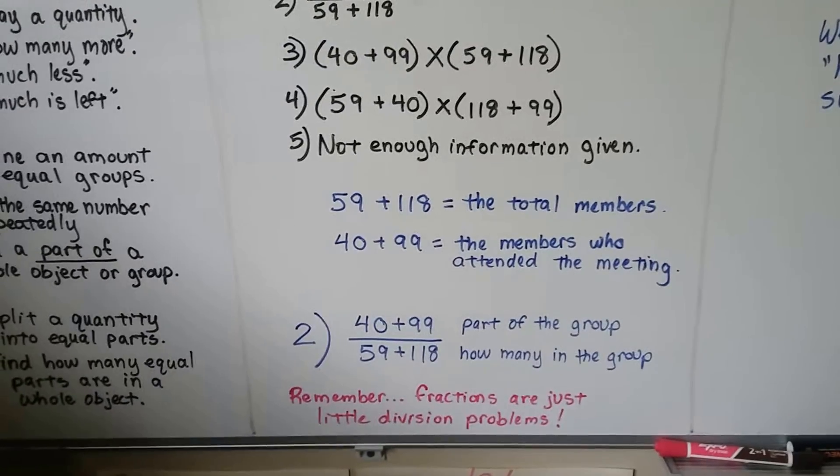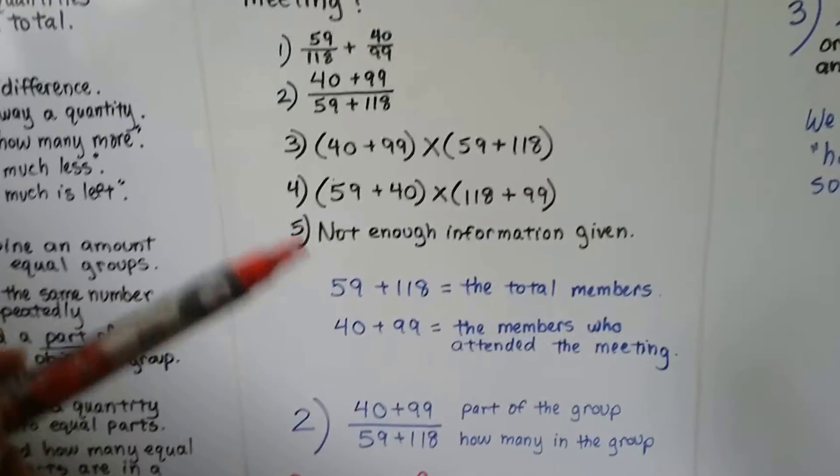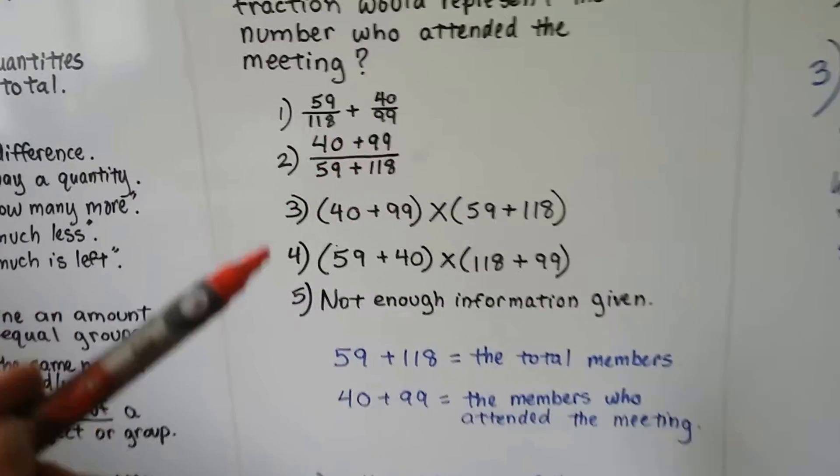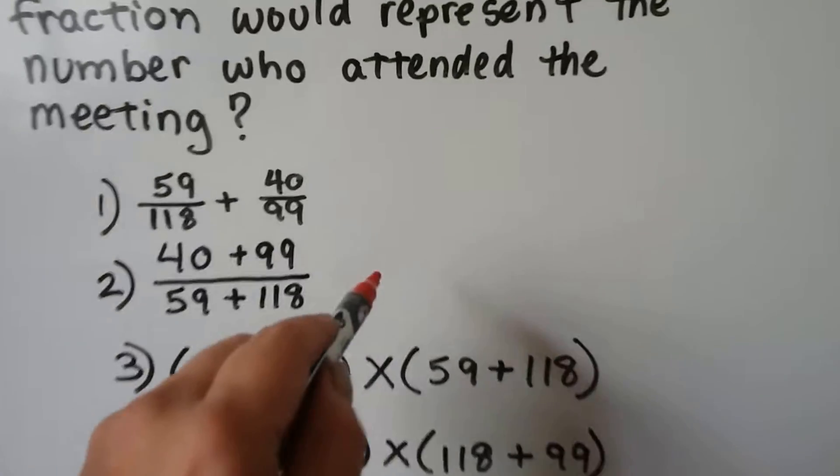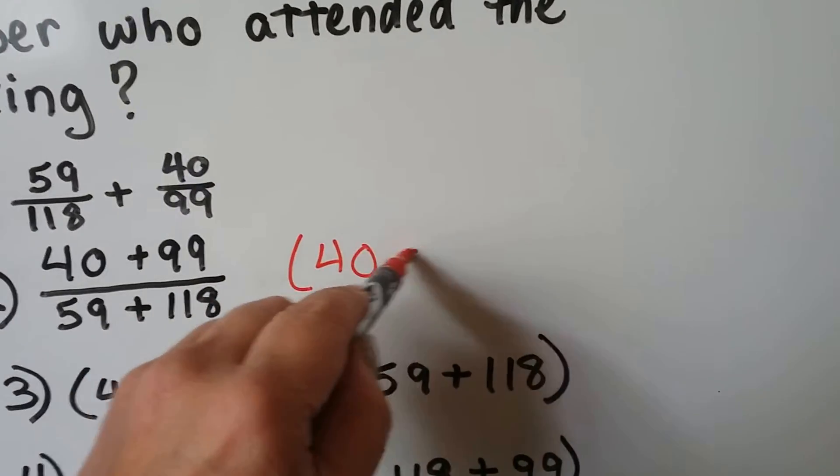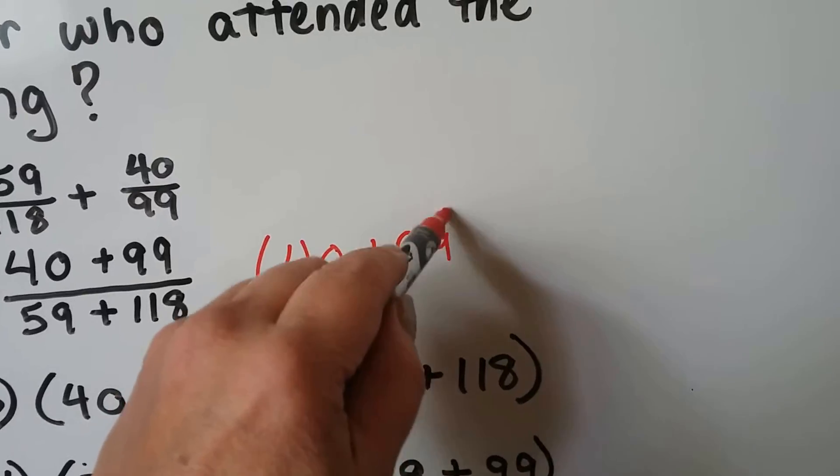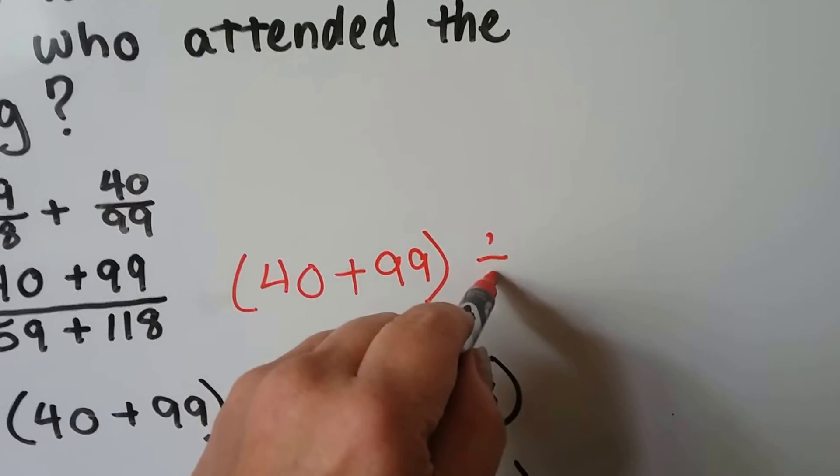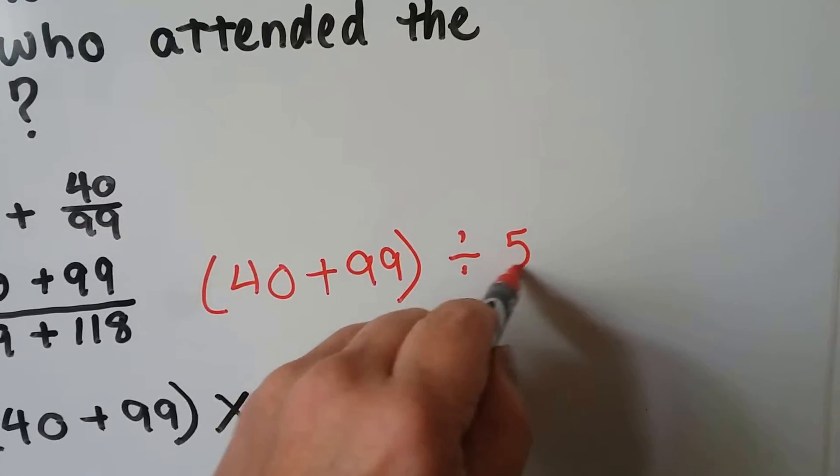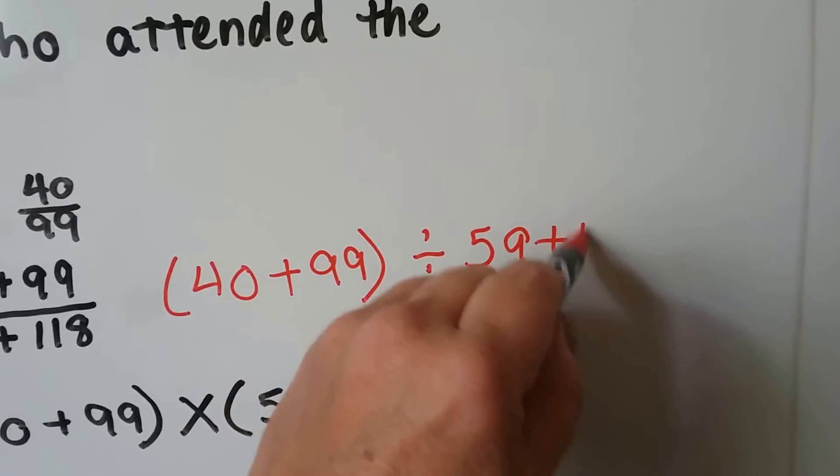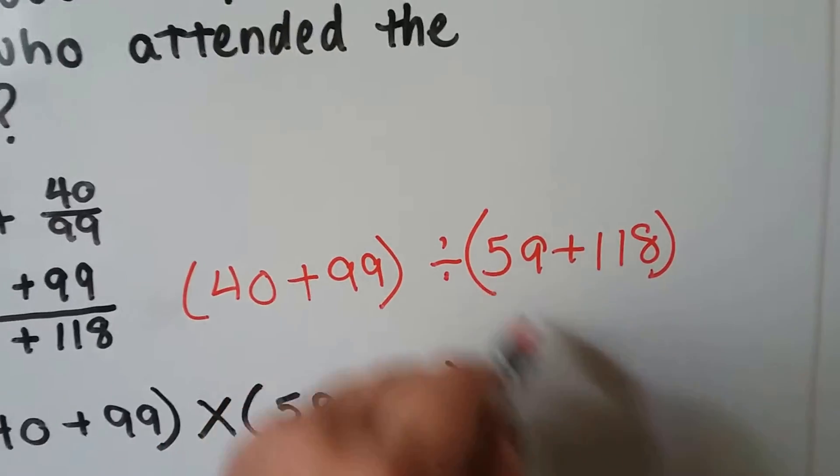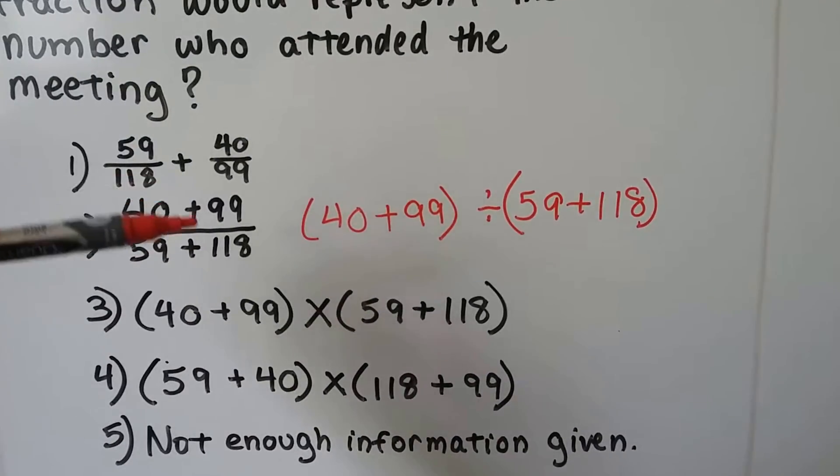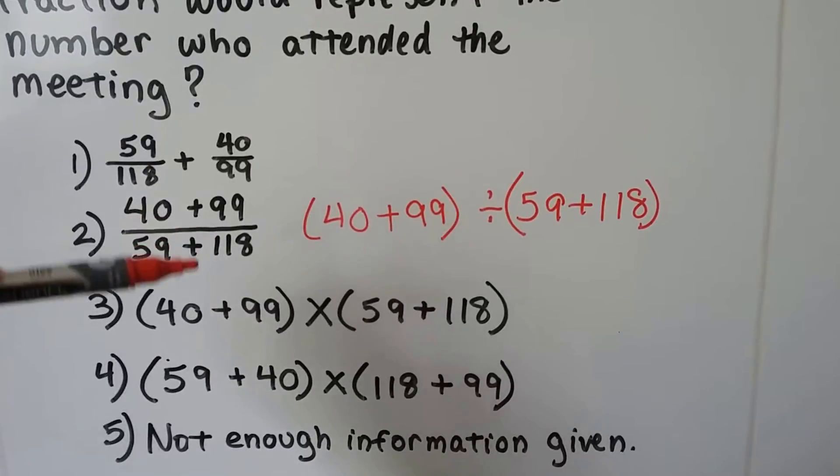So just remember, fractions are just little division problems. It might have even have said 40 plus 99 in parentheses divided by, here let me do it that way, 40 plus 99 divided by 59 plus 118. See? So that's what this says. Because that fraction bar means division.